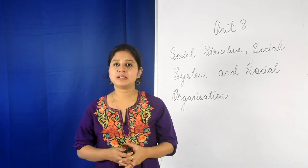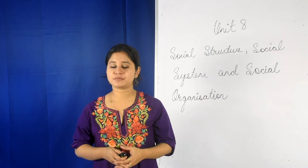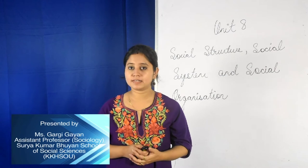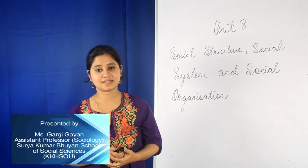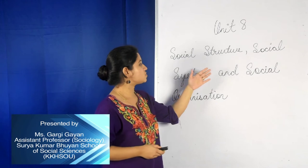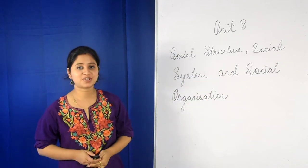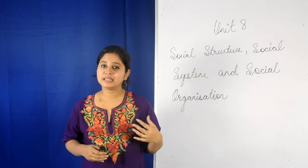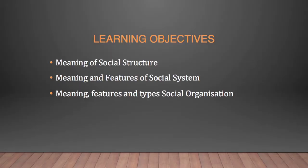Welcome, dear learners, to the LMS platform introduced by Krishnakanto Hendrikste Rupan University. Today we will discuss Unit 8, meant for the BA first semester, titled Social Structure, Social System, and Social Organization. In this unit, we will understand the meaning of social structure, social system, the various features of a social system, the meaning and types of social organization, and the different features of social organization.